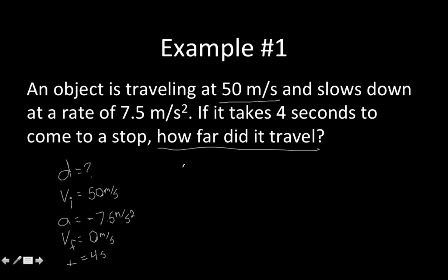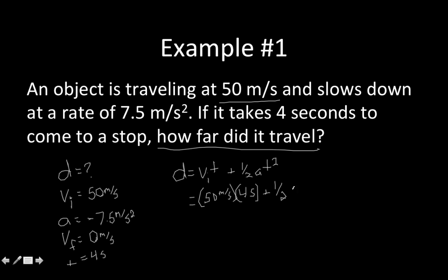Now that we know we're trying to find distance, and we have initial velocity, a negative acceleration, final velocity, and time, which equation are we going to use? We're going to use: distance equals initial velocity times time, plus one-half the acceleration times time squared. So plugging things in: initial velocity is 50 meters per second, time is 4 seconds, plus one-half times negative 7.5 meters per second squared, times 4 seconds squared.